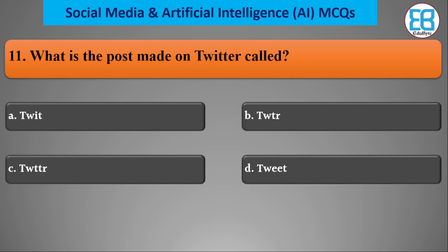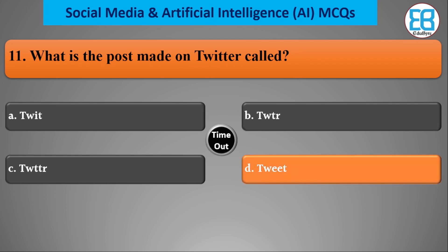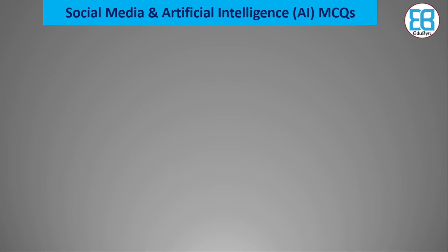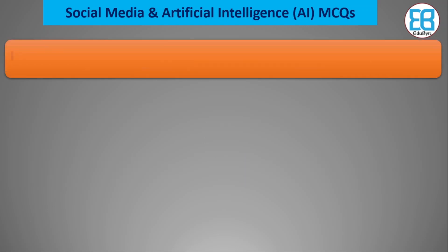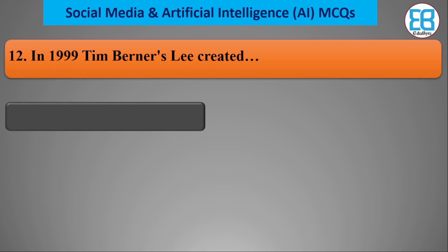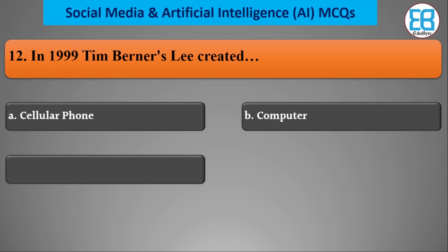What is a post made on Twitter called? The correct option is 'tweet', spelled T-W-E-E-T.